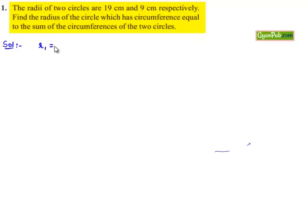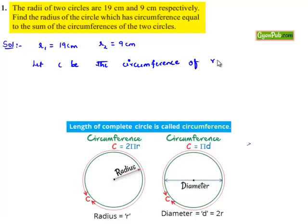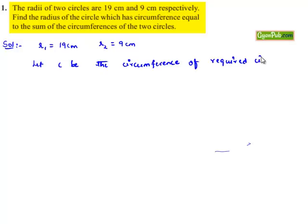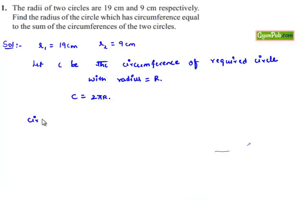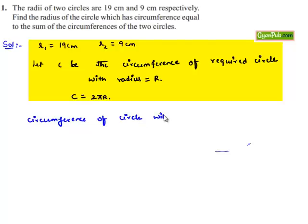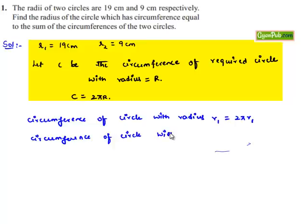Let us consider the two given radii as R1 = 19 cm and R2 = 9 cm. Let C be the circumference of the required circle with radius R, i.e., C = 2πR. The circumference of the circle with radius R1 is 2πR1, and the circumference of the circle with radius R2 is 2πR2.